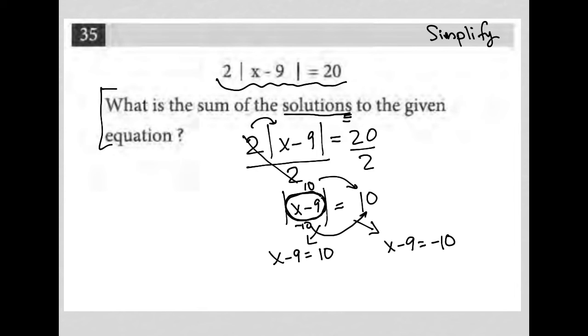What are the two x values that make this work? One x value will make it equal to 10. Let's figure out what that is. We add 9 to both sides. We get x equals 19.